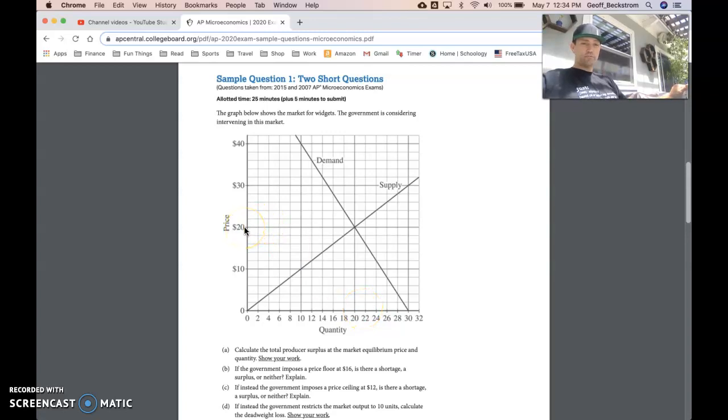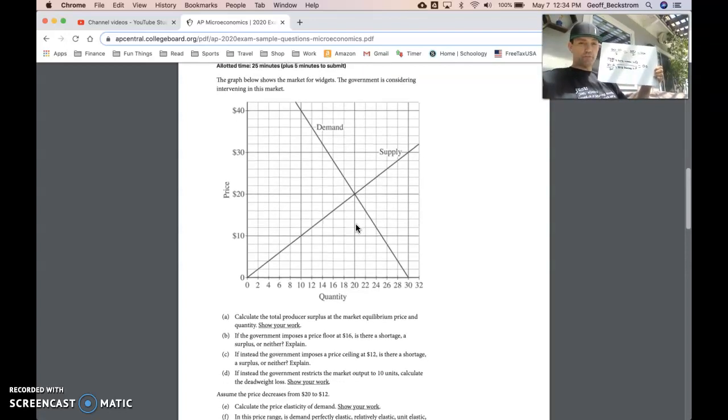The producer surplus is bounded by the supply curve, the quantity, so the quantity is unrestricted here, and the price. So the market equilibrium price being $20 and the quantity being 20 units. Our area of a triangle, very simple here, so $20 times 20 units divided by 2 equals 200. So $200 is our total producer surplus for part A.